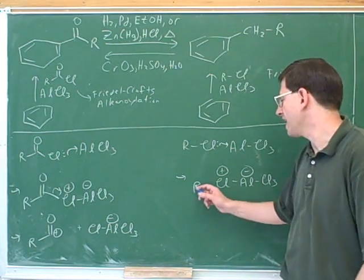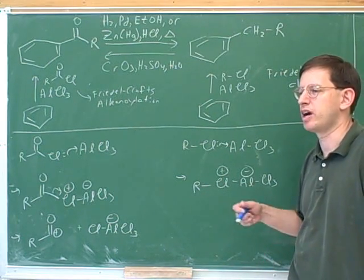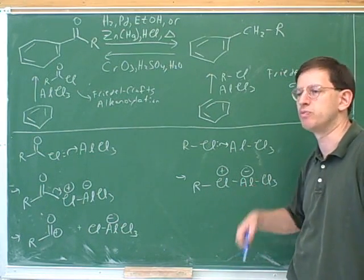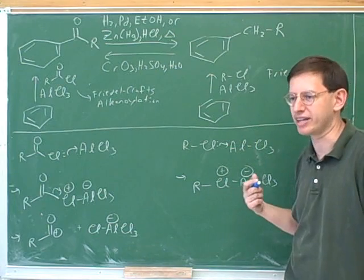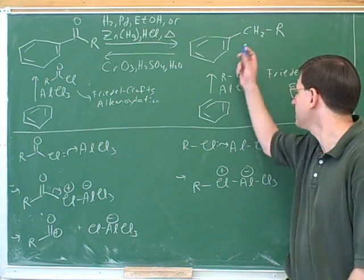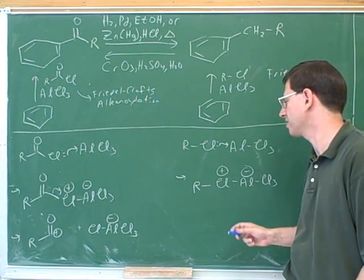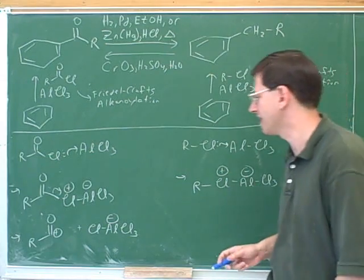But the problem is if we form a carbocation, or even if we just form a primary carbon with carbocation character, there could be rearrangements, and that gives us a mix of products that we don't like. We don't like rearrangements because that gives us a mix of products.